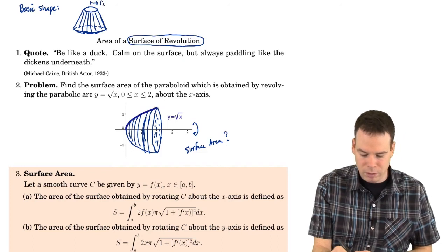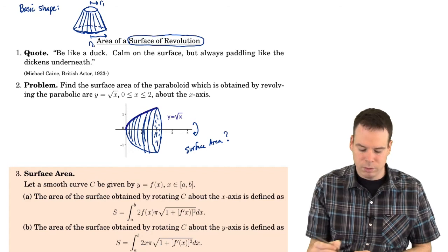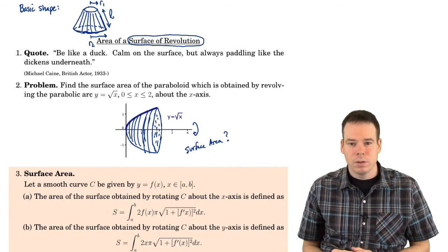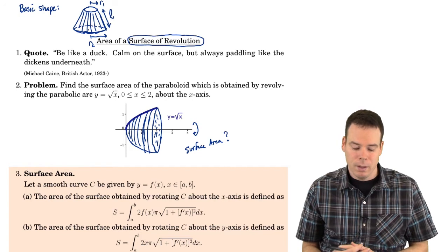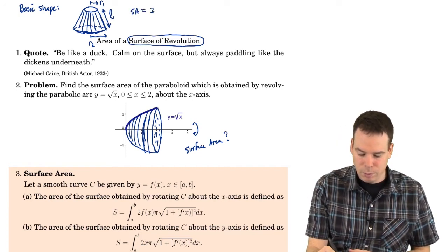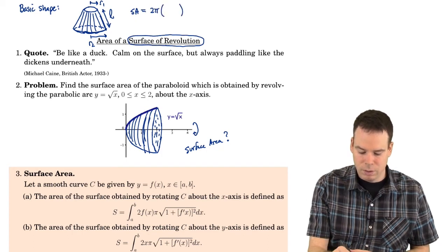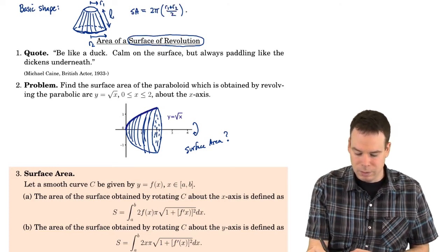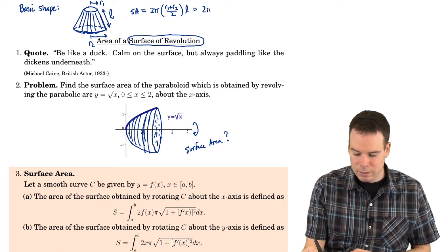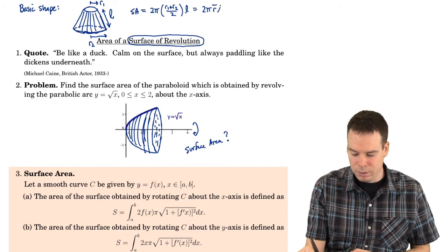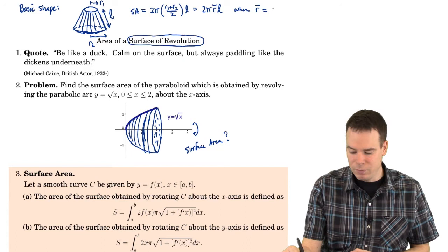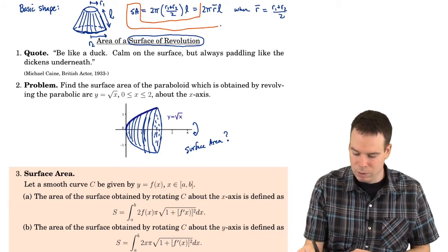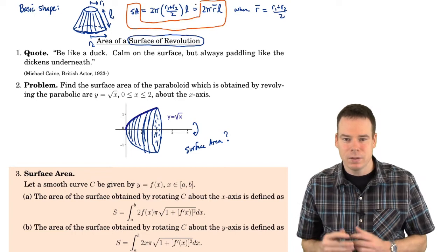Let me label a few things. The top radius we'll call R₁, the bottom radius R₂, and the side length we'll call L. The surface area of this frustum turns out to be 2π times the average of the top and bottom radii times the side length — that's (R₁ + R₂)/2 times L. I like to write this as 2π times R̄ times L, where R̄ is the average of the radii. This is our basic building block surface area formula.